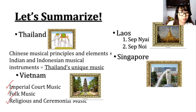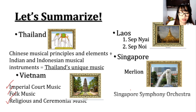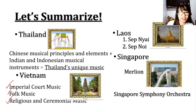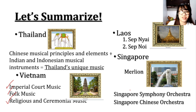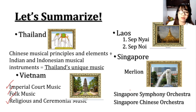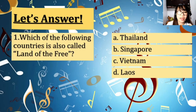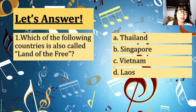For Singapore, we talked about the Merlion and its orchestras: the Singapore Symphony Orchestra, which plays Western-influenced performances, and the Singapore Chinese Orchestra, which plays ethnic performances. Now let's answer some questions. I'll give you 10 seconds to answer each question. Number one: Which of the following countries is also called Land of the Free? Thailand, Singapore, Vietnam, or Laos?